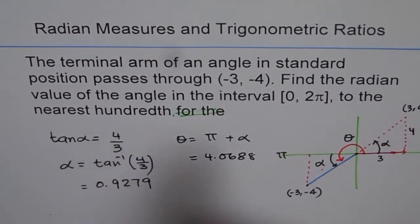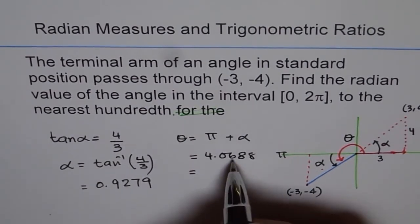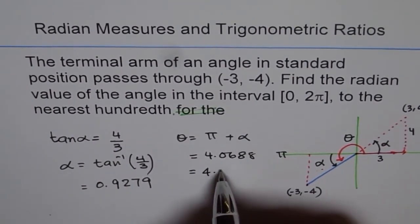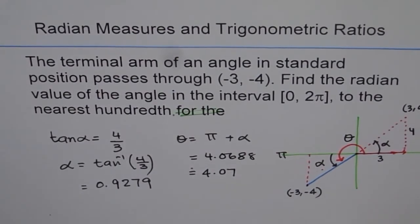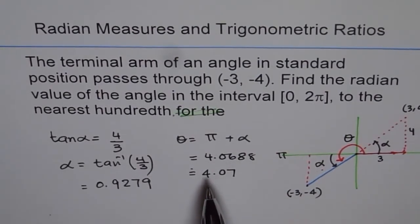Round to nearest 100th. So we have 100th is here, right? 4.07. So that is our answer for the angle in radians when the terminal arm passes through the given point, (-3, -4).